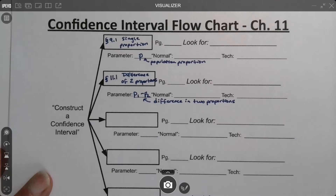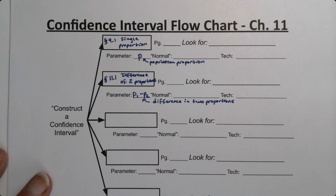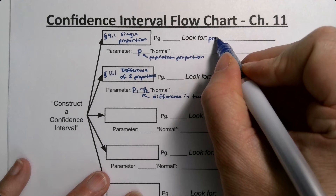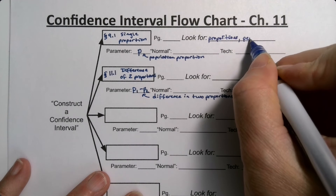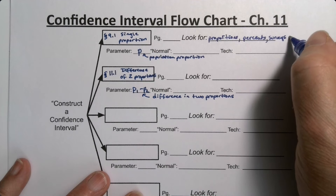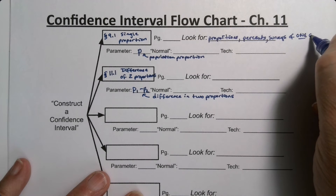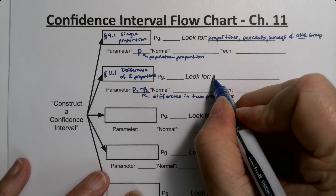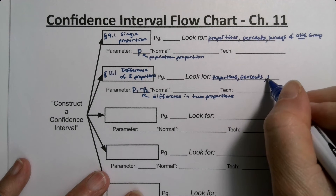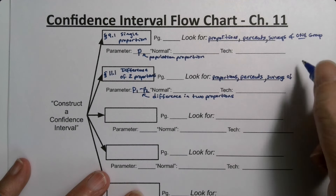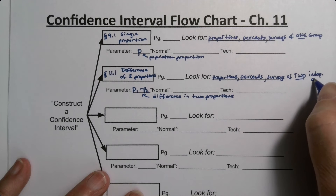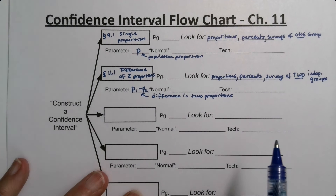The key question is how you'll know it's a population proportion question versus a mean question. You'll see things like proportions, percents, surveys, and polls for one group in chapter 9. Down here for section 11.1, it's the same keywords — proportions, percents, surveys — but for two groups, because you need two independent groups to perform that interval.